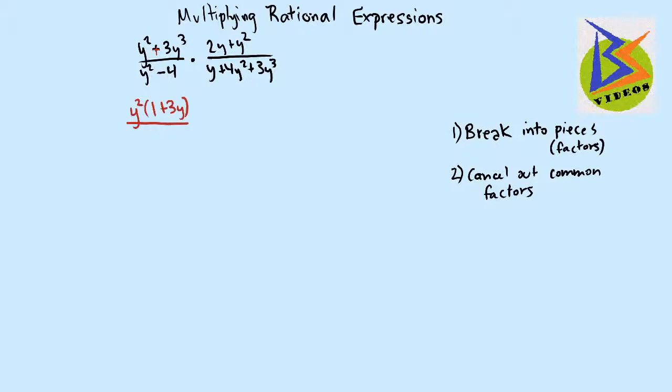Let's go to the bottom here. Y squared minus 4 we see is a binomial, which is a difference of squares. So we take the square root of the first minus the square root of the second times the square root of the first plus the square root of the second.